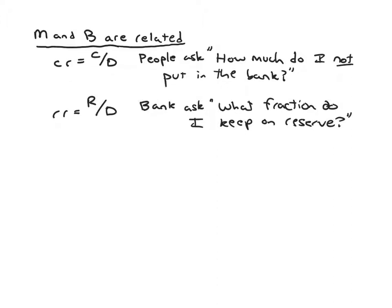So we'll just take the answers to those questions as given. We have CR and RR. What we did in class and what you can review on your own time is a derivation that connects M to B using CR and RR. What we ended up with was this seemingly complicated expression, but it's really not too bad when you take it all in. It's CR plus 1 over CR plus RR times B. M will be bigger than B because B is multiplied by this thing in parentheses. And we call this thing in parentheses the money multiplier.